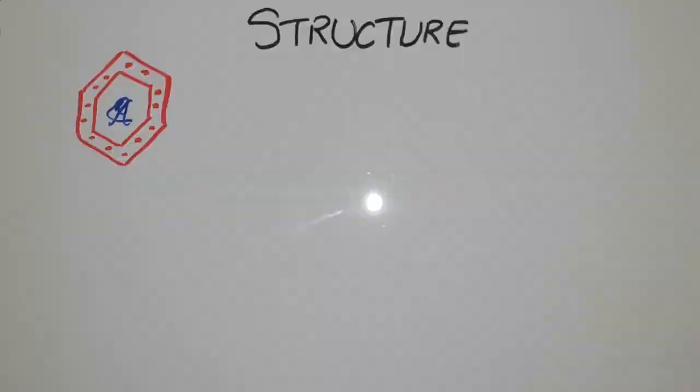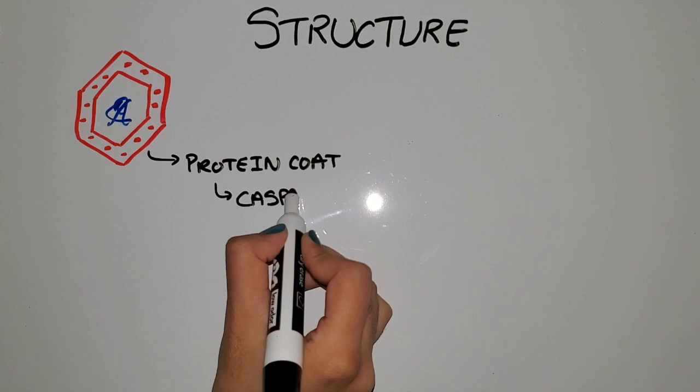Viruses actually come in many different shapes, sizes, and designs. What you see in front of you is the simplest structure of a virus. Let's begin with the outside: this is a protein coat, which is called the capsid. Inside this protein coat is our genetic material.